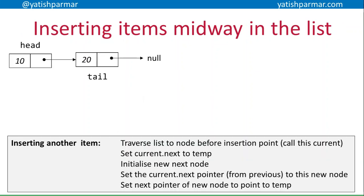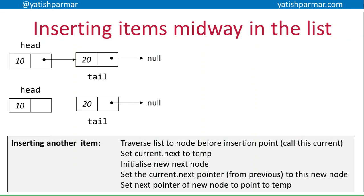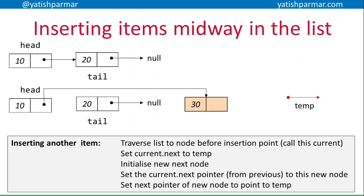Now what happens if we want to insert an item halfway through the list? First I need to traverse the whole list to the point before the insertion point — I'll call that node 'current'. For example, if I want to insert something at position one (remembering zero is the first node, one is the second), I traverse to just before the insertion point and call that node current. Then I copy current.next to a temp variable so I can keep that pointer as a reference to use later. Now I initialize my new node.